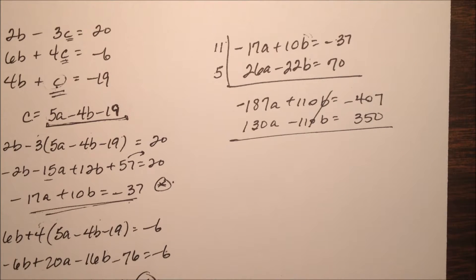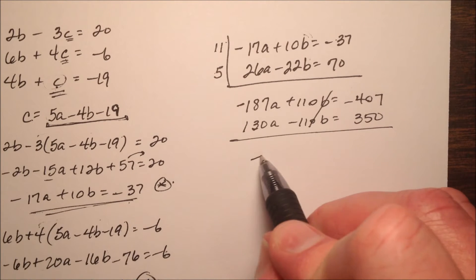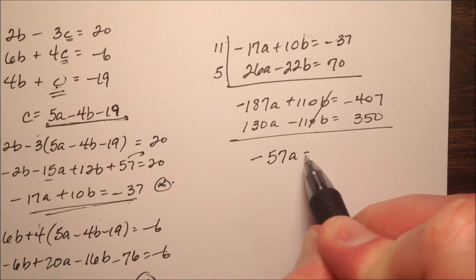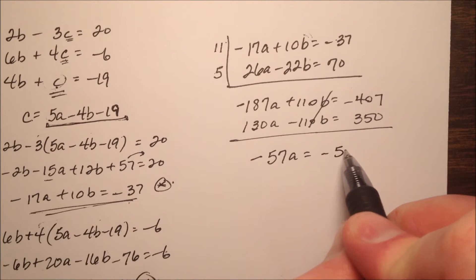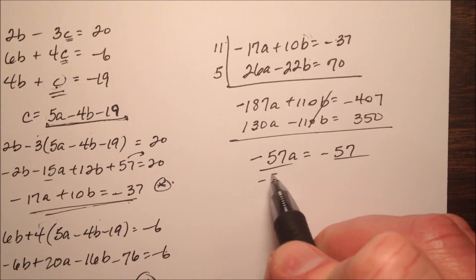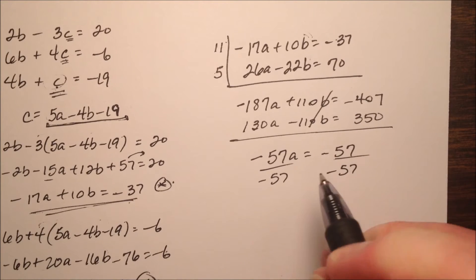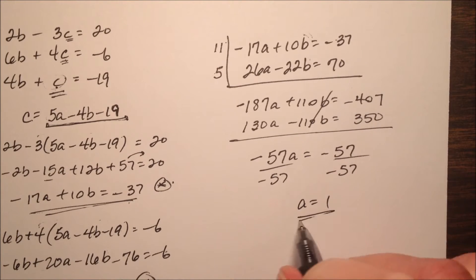My b's cancel, which was by design, so my a's will be a negative 57a equals a negative 57. So that actually came out pretty nicely, so a equals 1.